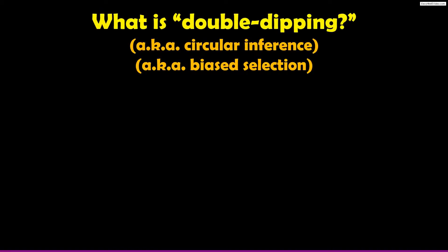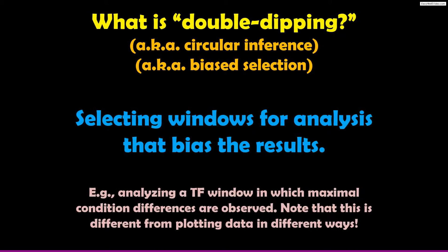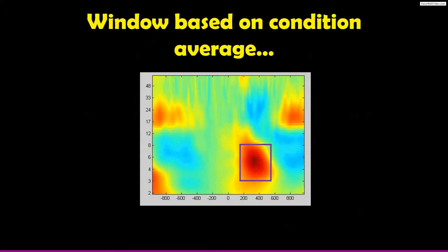It's very important to avoid something called circular inference, which is also called biased statistical selection and colloquially called double dipping. Double dipping or circular inference means that you are selecting windows or data to analyze in a way that biases the statistical analyses towards getting some particular result.